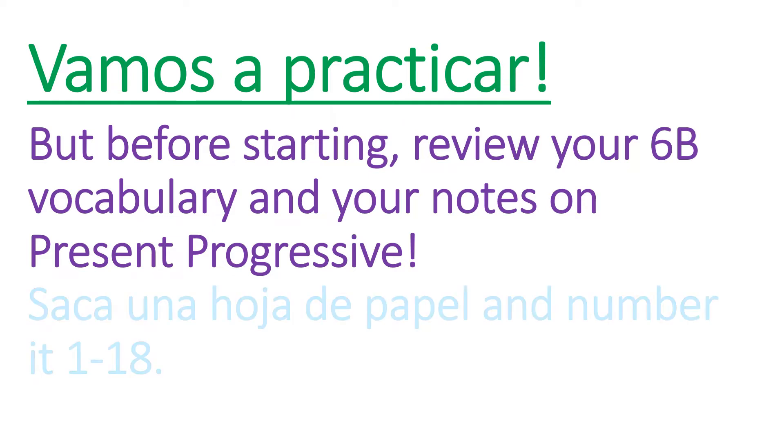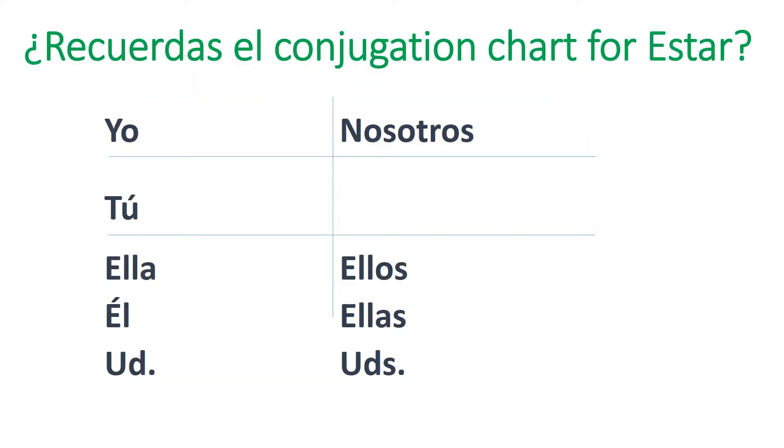Pause the video to do that now. Okay, now that you're ready and confident, saca una hoja de papel and number it uno a dieciocho, 1 through 18. We're going to do 18 sentences. Before we do, let's just refresh ourselves on the verb estar.